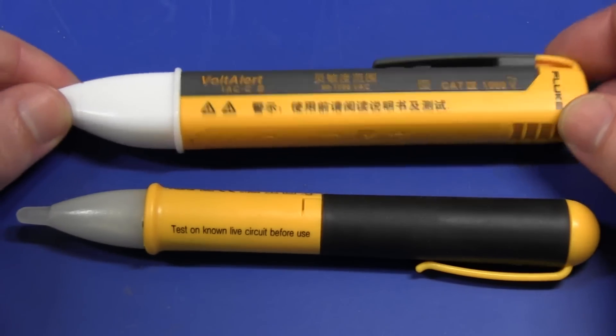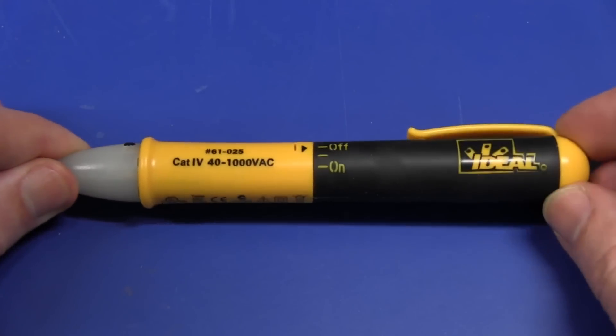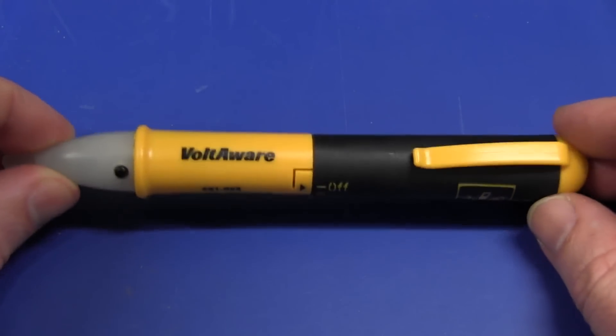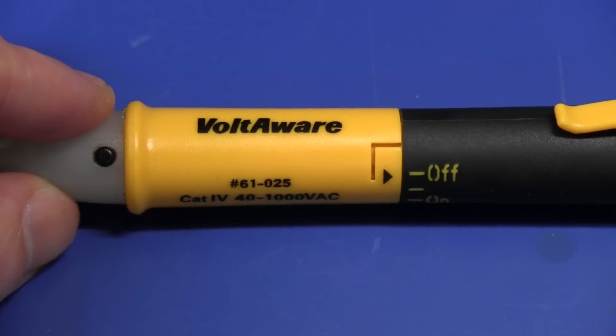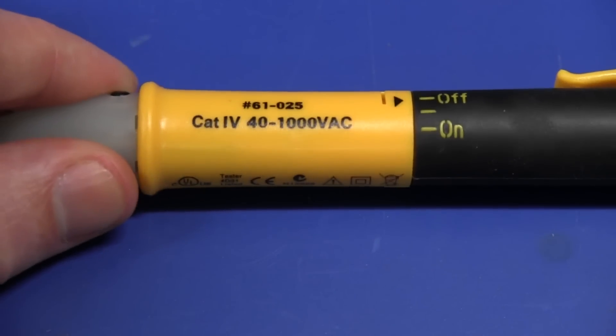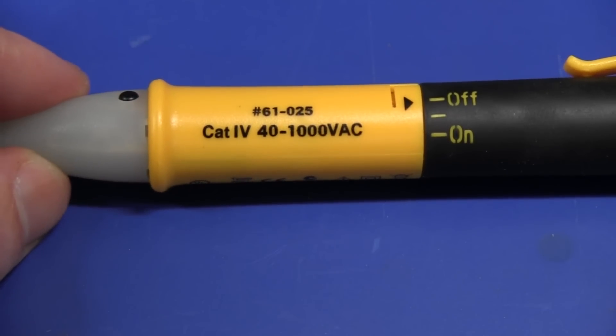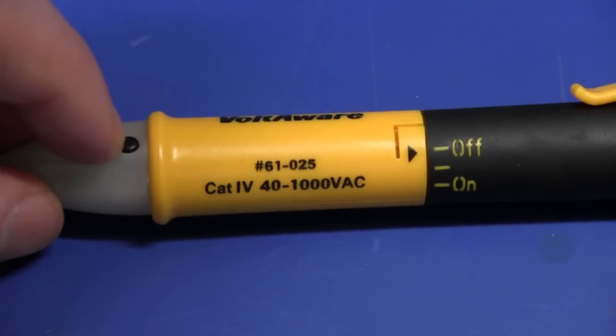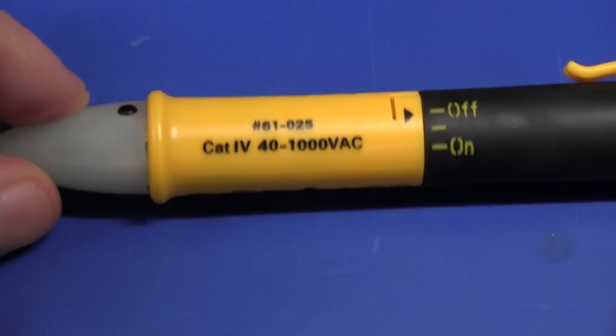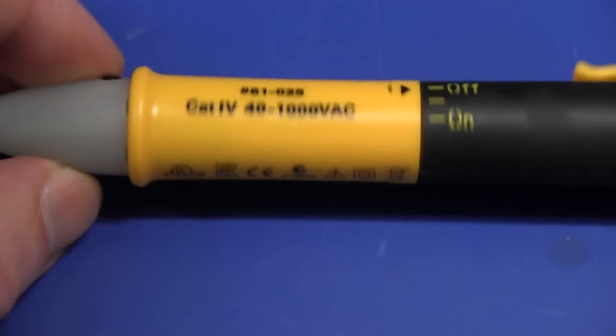And this is the Fluke Volt Alert here, but we're not going to look at that one today. What we're going to tear down is this ideal brand, Volt Aware. And this Volt Aware one is a basic twist-on, twist-off type. It's Cat 4 rated. It claims to have a detection range of 40 to 1,000 volts AC. There's a button here which turns the beeper on and off. And it comes with all sorts of standard goodness as well. UL CE rated and stuff like that. Let's see if we can take this thing apart.